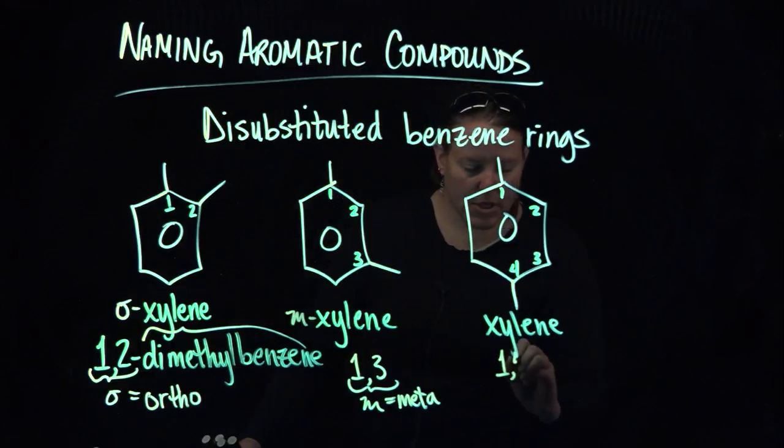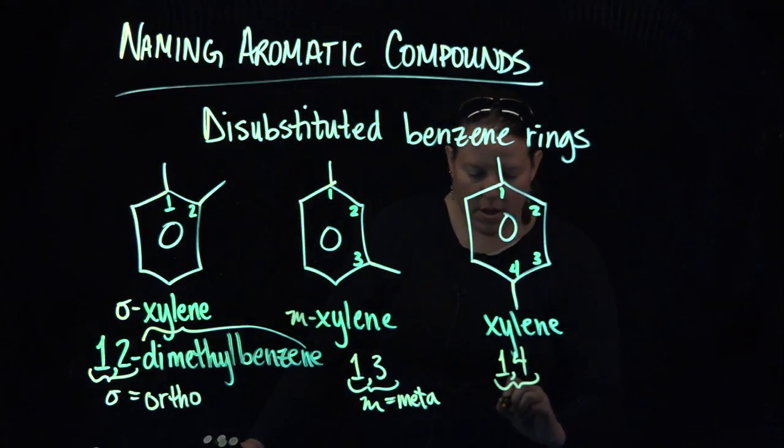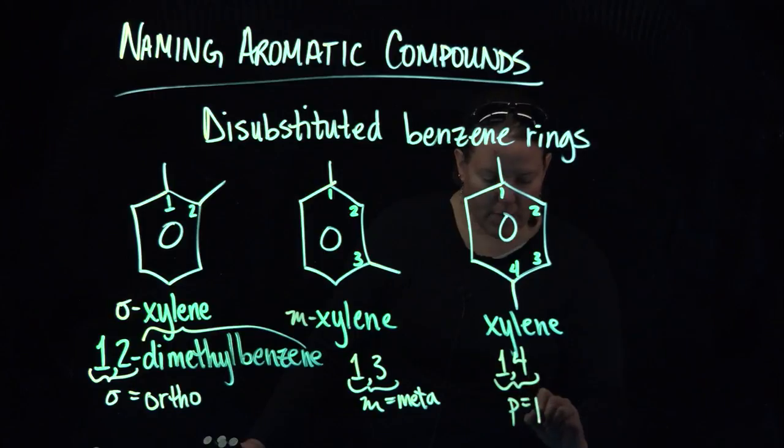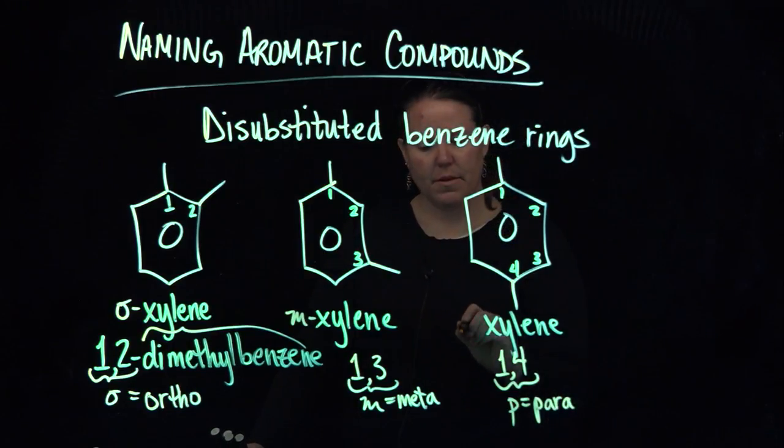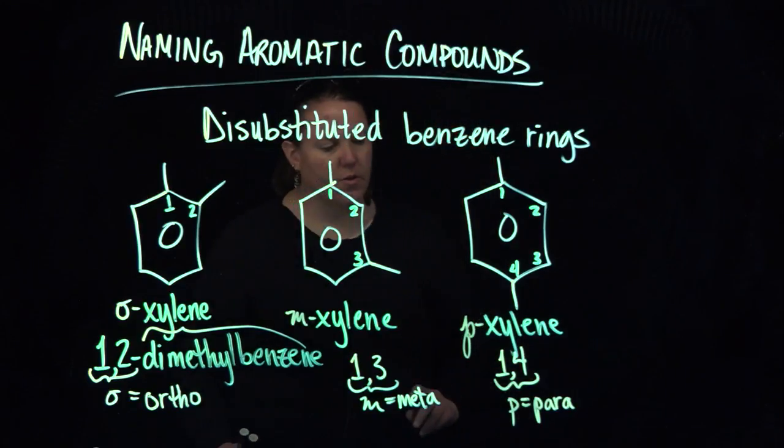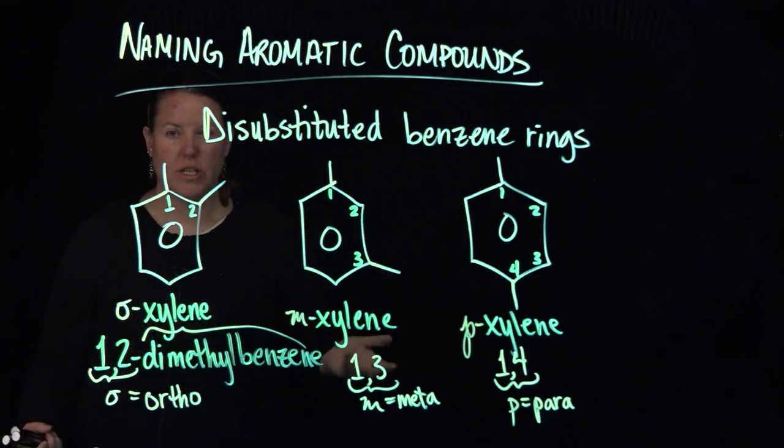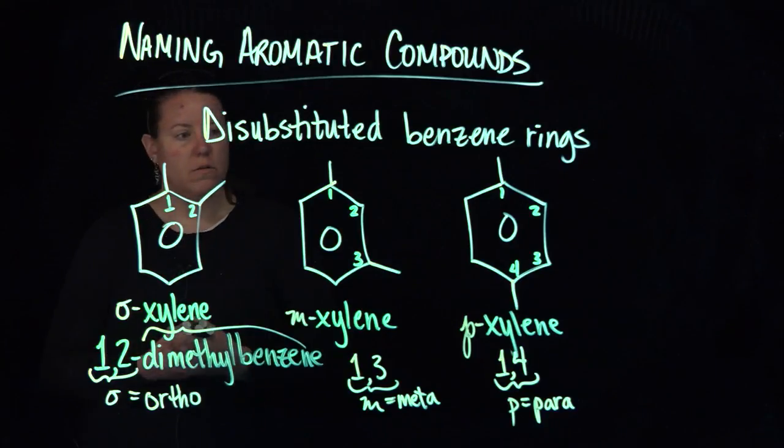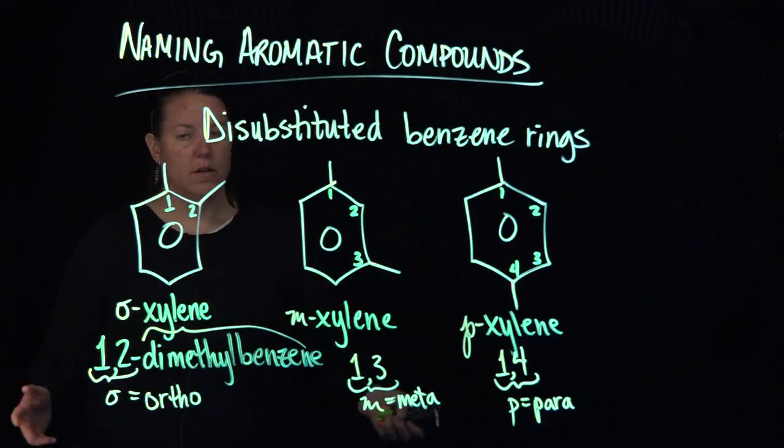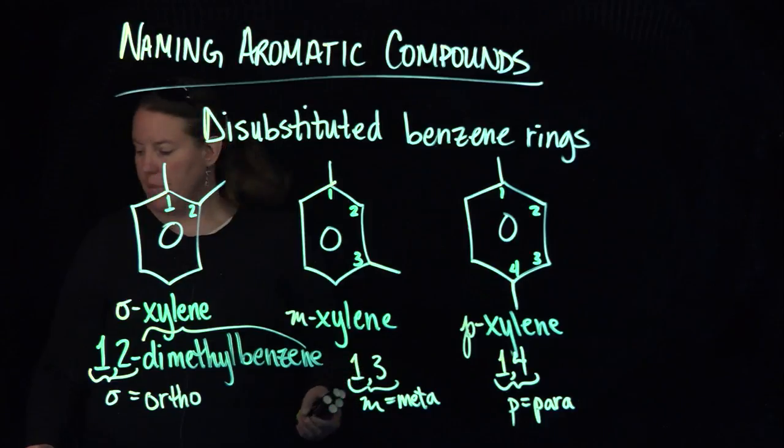And then the 1, 4 designation gets a P in front of it, which is para. And I'm just doing cursive for all of these, although you could just do regular. Often they're seen with some kind of different font. So that gives you a sense. So, having said this, we can do ortho, meta, and para.